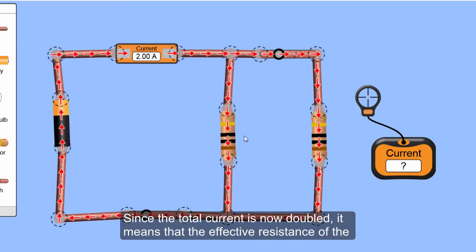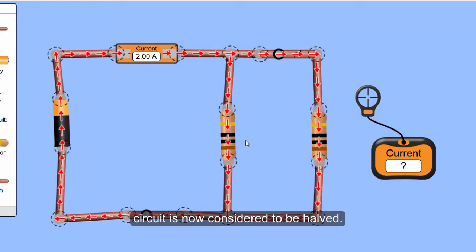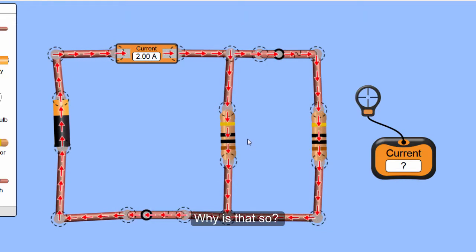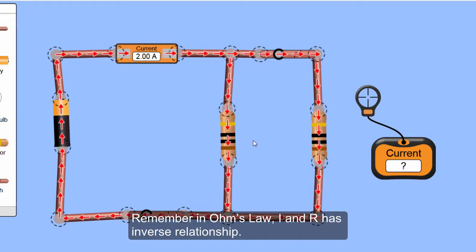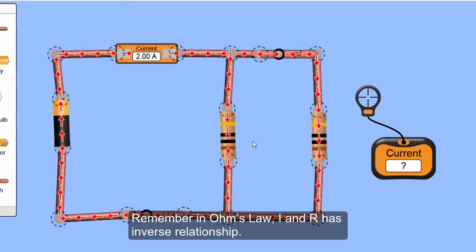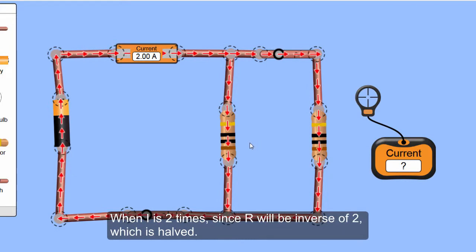Since the total current is now doubled, it means that the effective resistance is now considered to be half. Why is that so? Because remember in Ohm's law, I and R have an inverse relationship. When current is 2 times, R is the inverse, which is actually half.